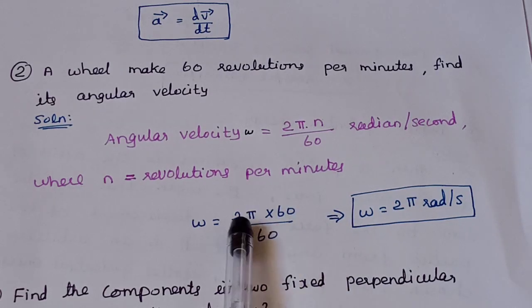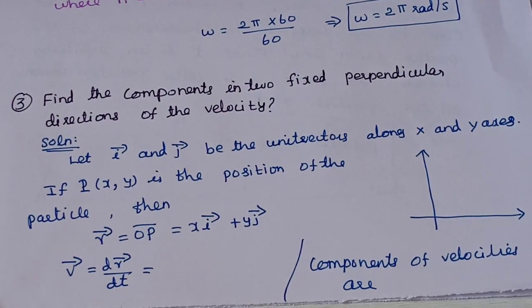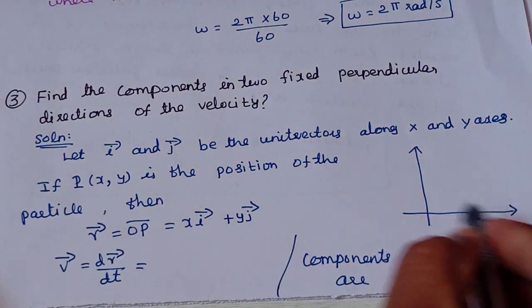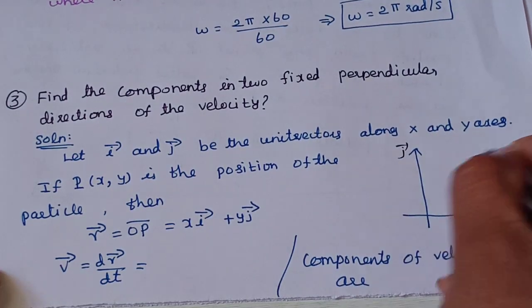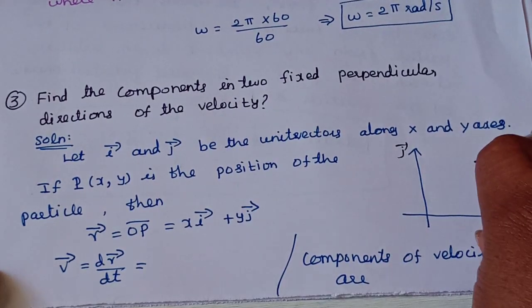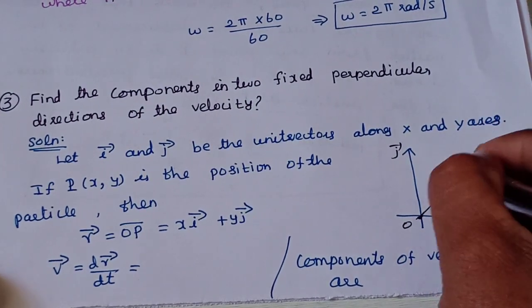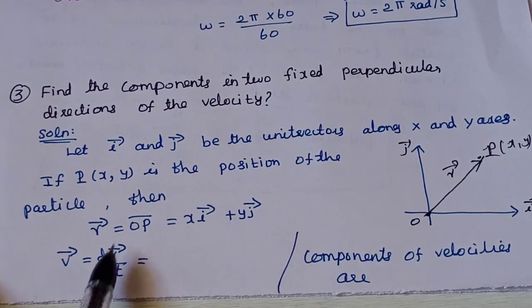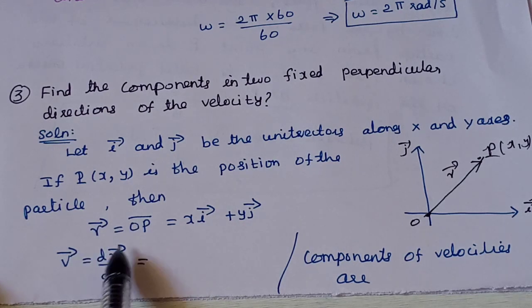Find the components in two fixed perpendicular directions of the velocity. The x-axis and y-axis are the two perpendicular fixed directions. Along the x-axis will be the unit vector i-vector and the y-axis direction will be the unit vector j-vector. Suppose at position P at a particular time t, with coordinates x, y and fixed origin O. The position vector r-vector equals x·i-vector plus y·j-vector.